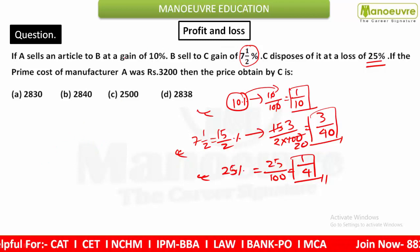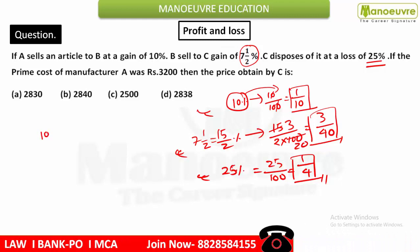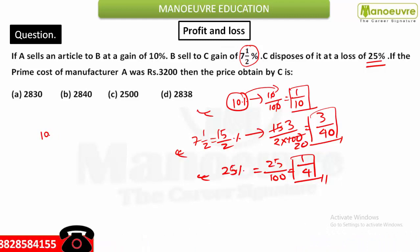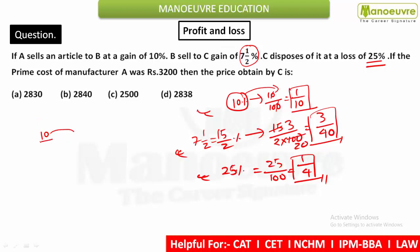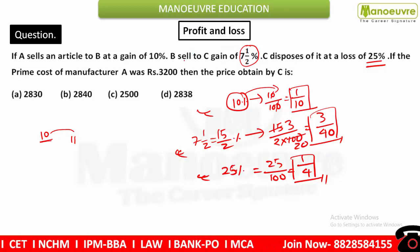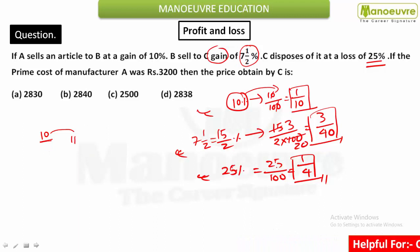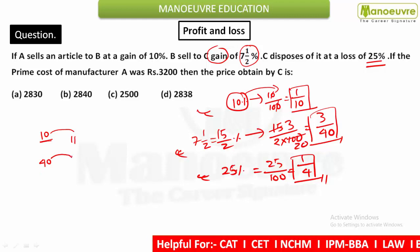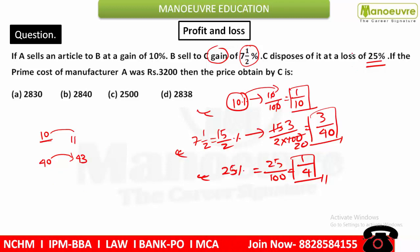Now, a 10% gain means: if the base value is 10, then 10% of 10 is 1, so it becomes 11. So the fraction for gain is 11/10. Similarly, for B selling to C with a gain of 3/40 — the base value is 40, and the gain is 3, so it becomes 43. The selling value becomes 43/40.